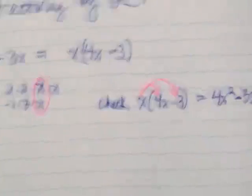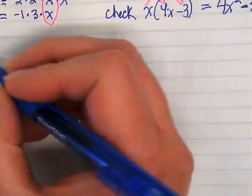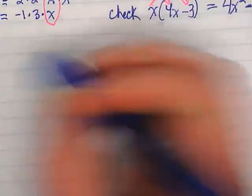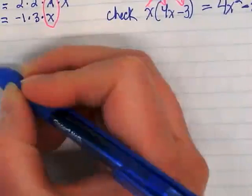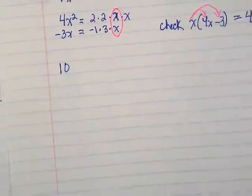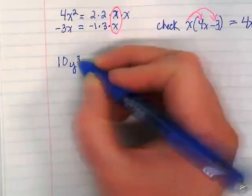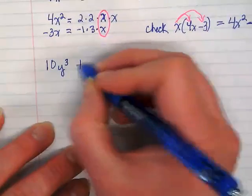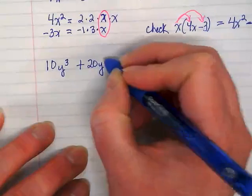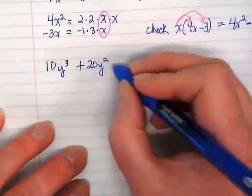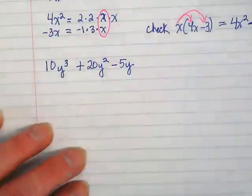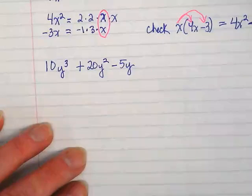Let's try another one that's a little bit more complex because it's a trinomial. Let me know if I go off screen please. Let's try 10y to the third plus 20y to the second minus 5y. I have three terms I have to factor.